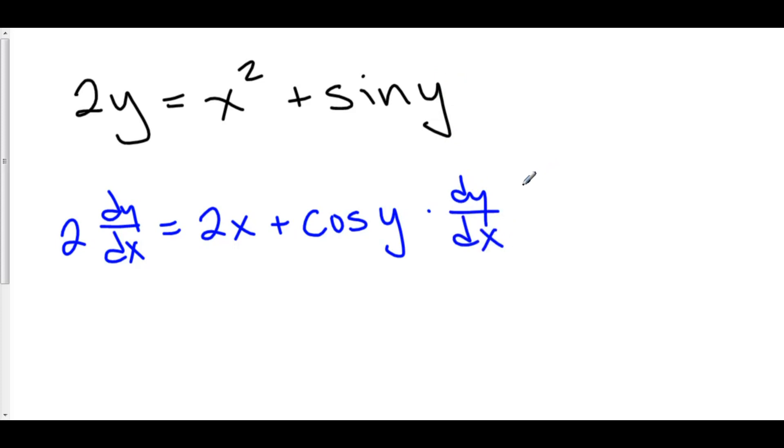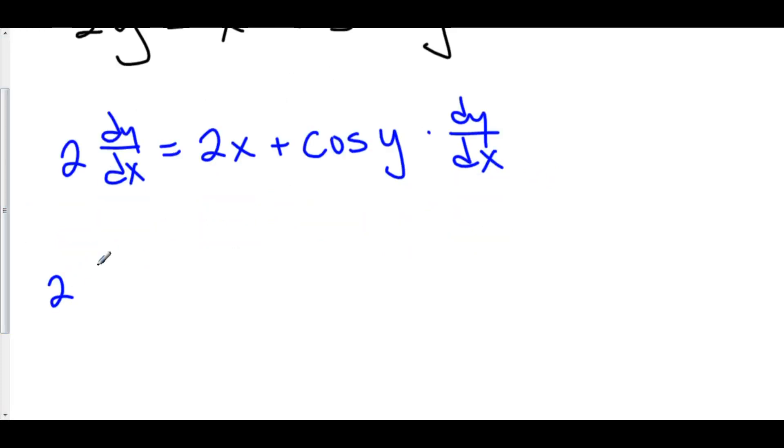Now let's get our dy/dx's on one side. So here we have 2 dy over dx minus cosine y dy/dx is equal to 2x.